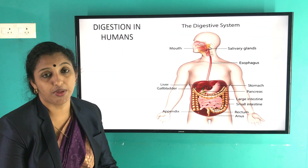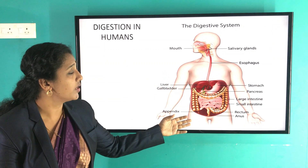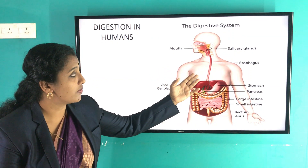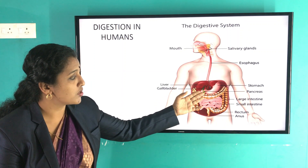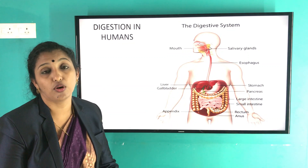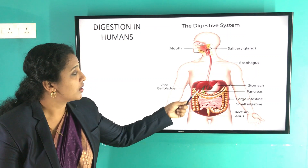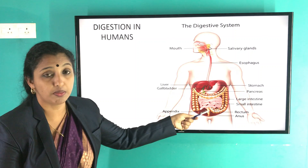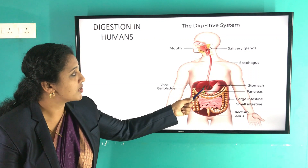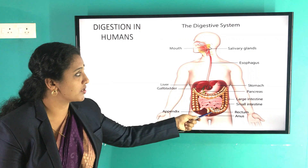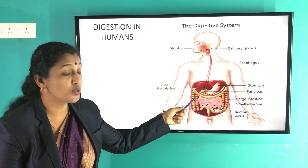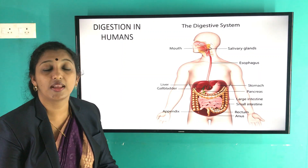Next is digestion in human beings. This is a picture of the digestive system. The different parts are: mouth, salivary glands, esophagus, stomach, small intestine, large intestine, rectum, and anus. All these parts together form the alimentary canal. Along with the glands associated with it, they together constitute the digestive system.